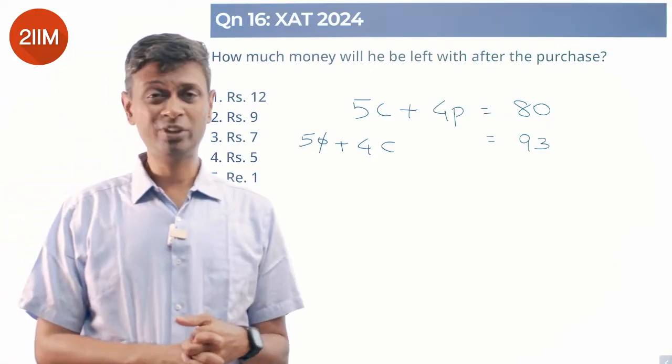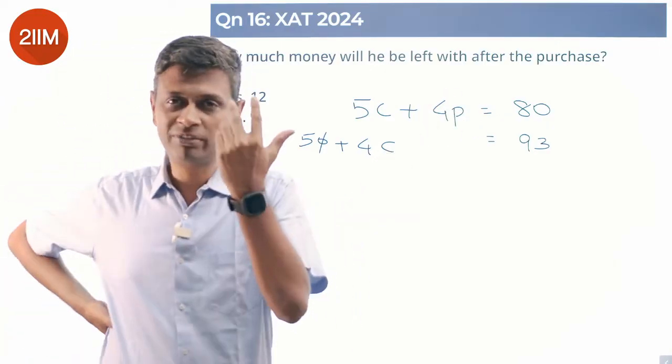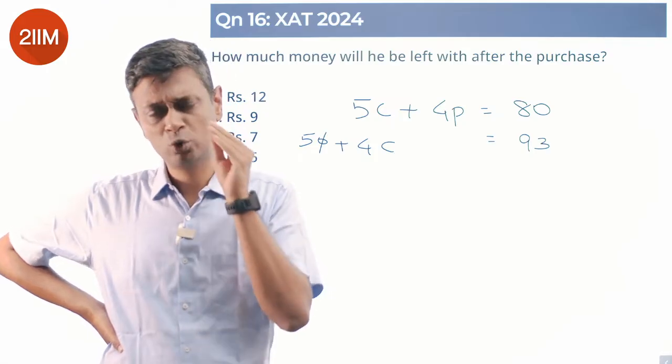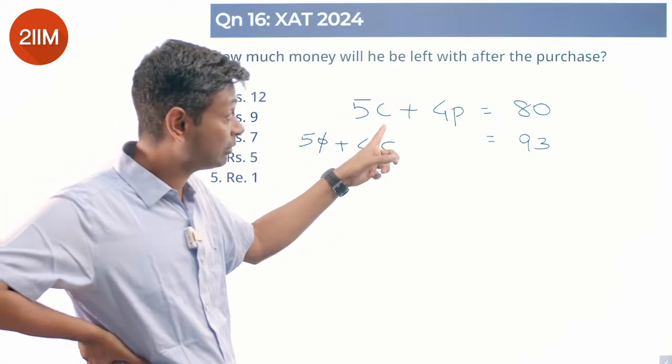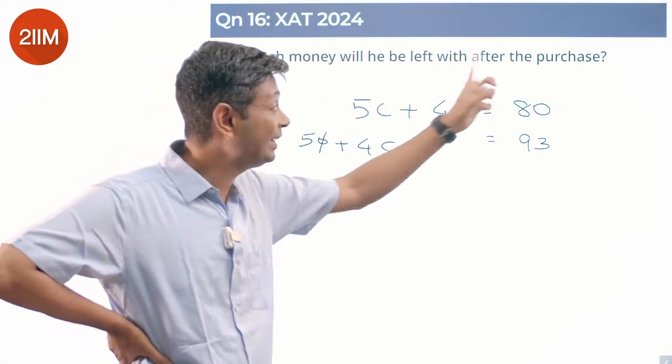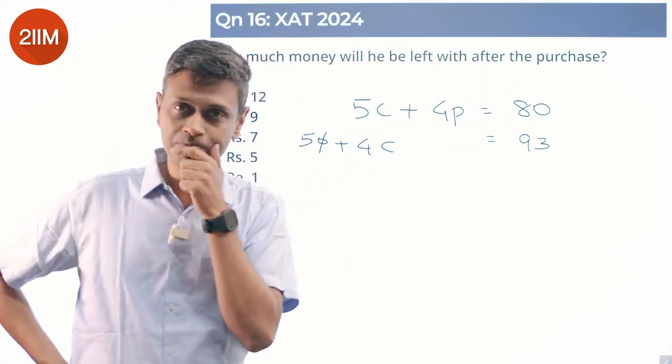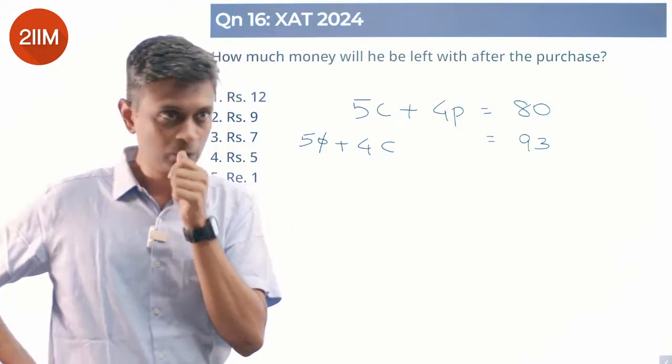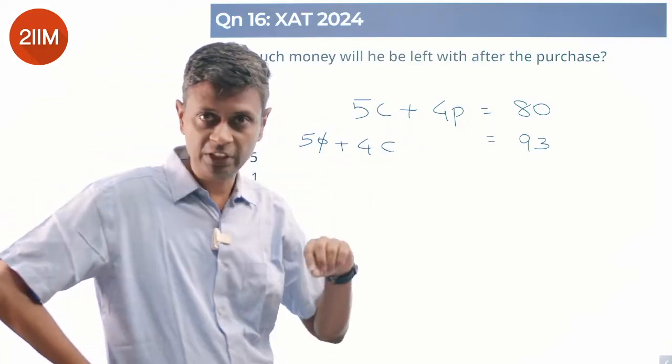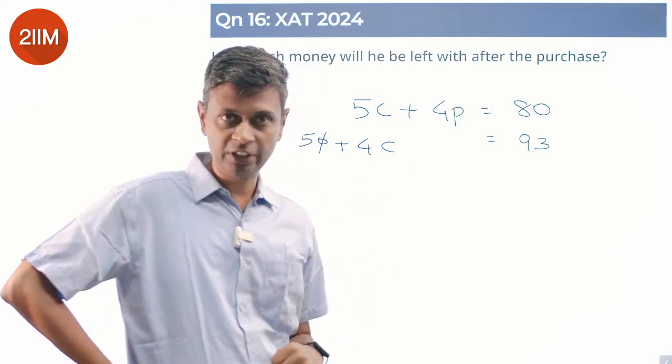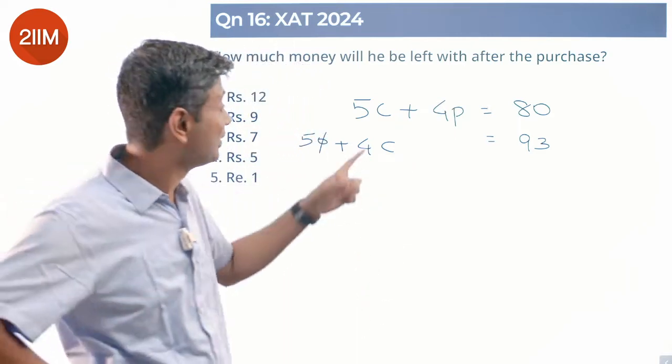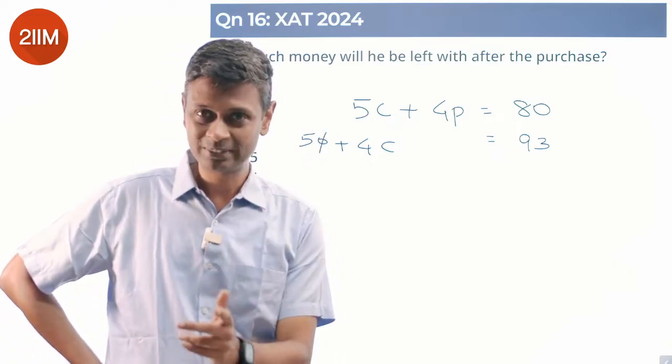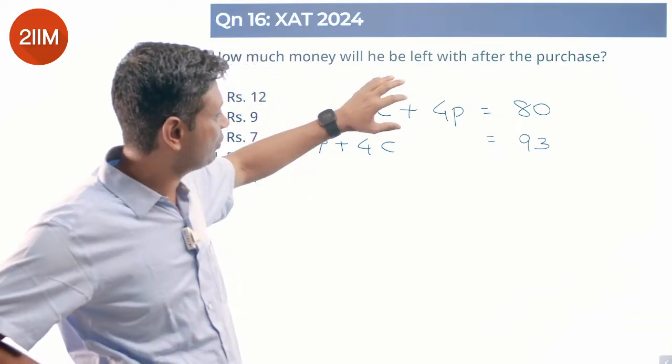Now the first equation is very interesting for me because 80 happens to be a multiple of 5 and 4. Super fun to think why, because 5C is a multiple of 5, 80 is a multiple of 5, so 4P should be a multiple of 5, or P should be a multiple of 5. 4P is a multiple of 4, 80 is a multiple of 4, so 5C should be a multiple of 4.